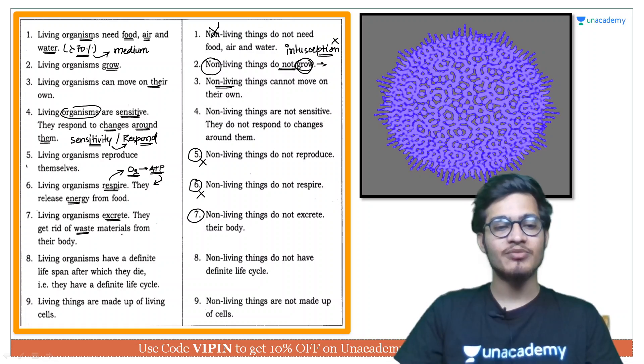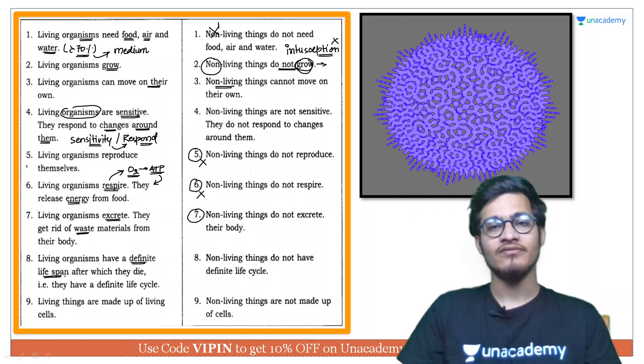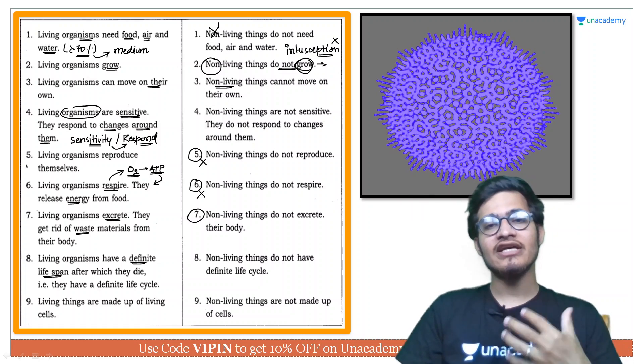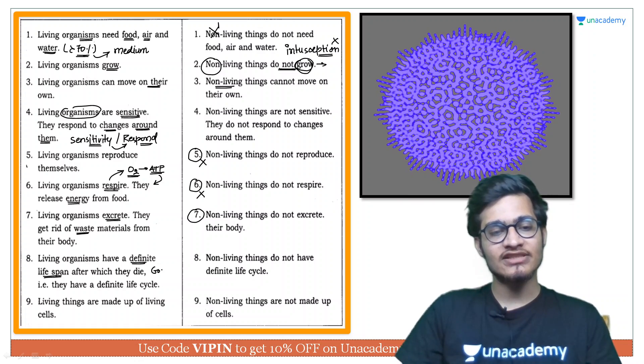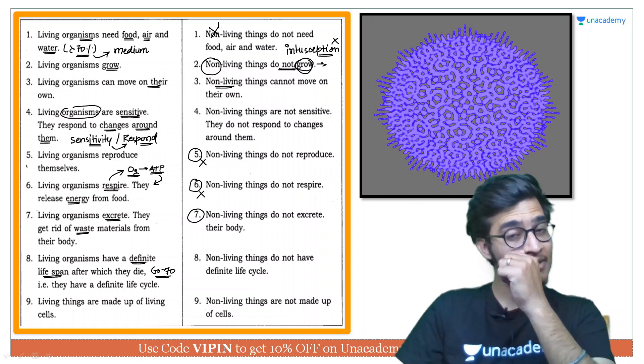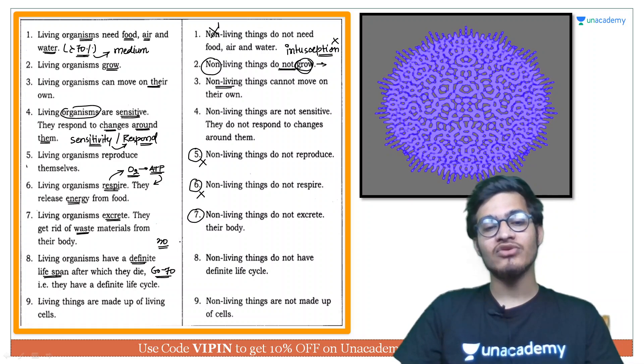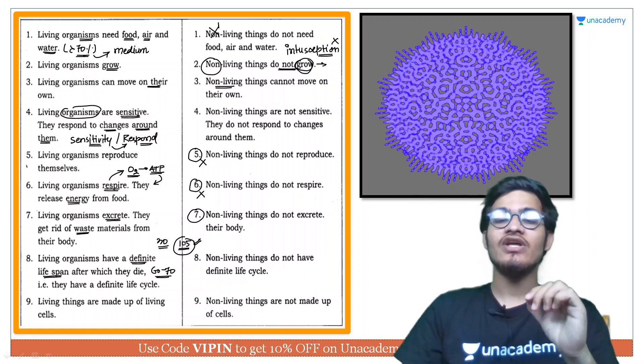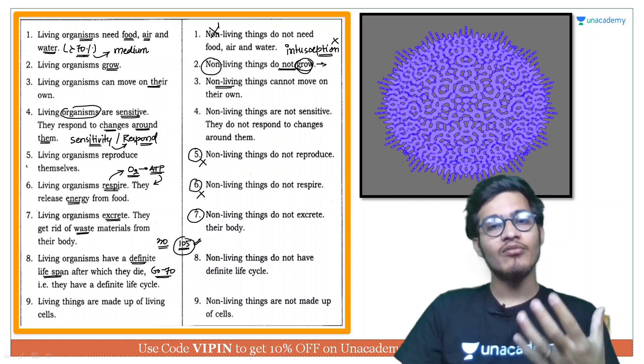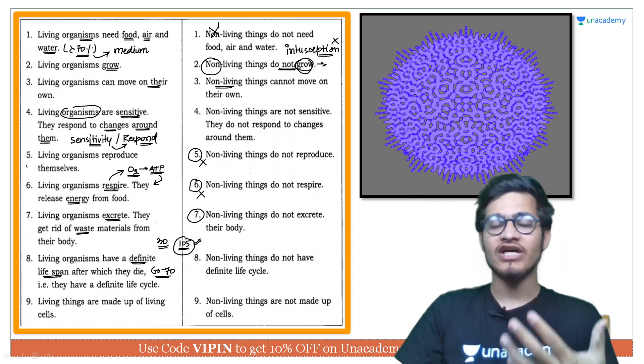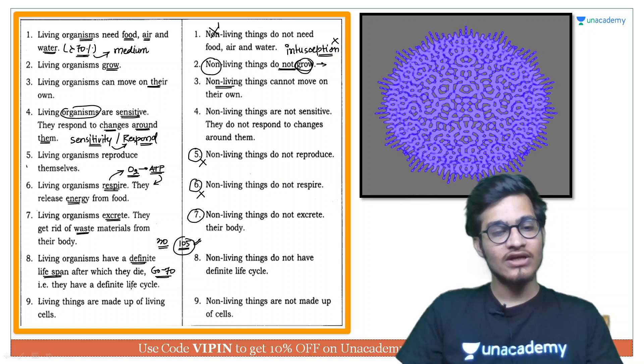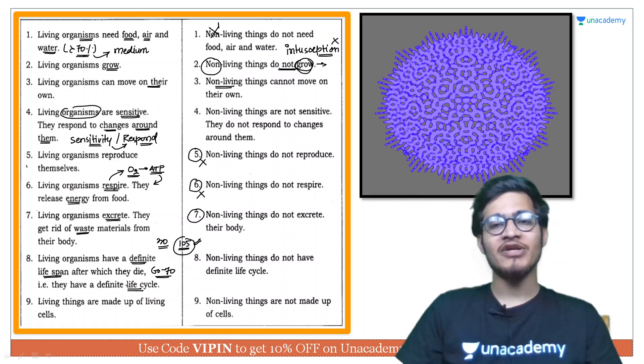Living organisms ka definite life span hota hai, life span jo ki ek range mein ho sakta hai agar aap exceptions ko side mein rakh de toh. Jaise ki agar ek human being hai toh uska life span jo hai around 60-70 saal ke aaspas rehta hai. Lekin agar aap ek aise bande ki baat kare jiska accident ho gaya road accident aur wo 30 saal ke umra mein hi khatam ho gaya toh that is an exception. Aur agar Japan vagairah mein aap log dekhen toh 105 saal ke bhi aapko buzurg milenge, sau saal se upar ke kaafi log aapko waha par dekhne ko milenge so they are also the exception kyunki unki body jo hai bahut hi zyada acche tarike se unki defending capacity aur wo saari cheezein bahut better rehti hain.